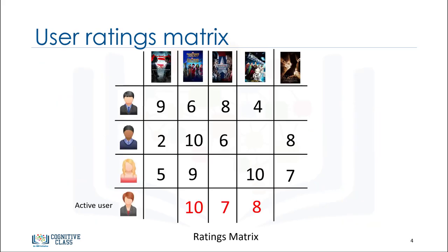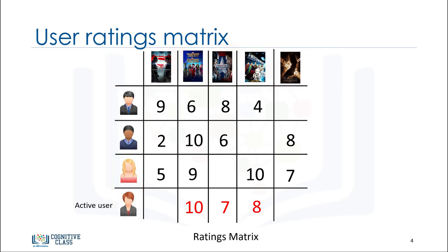Assume that we have a simple user-item matrix which shows the ratings of four users for five different movies. Let's also assume that our active user has watched and rated three out of these five movies.